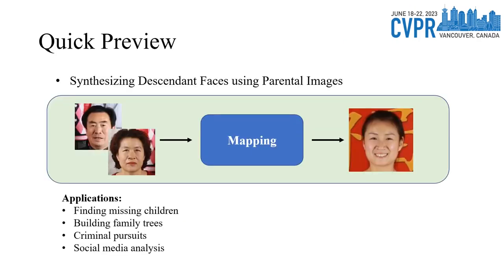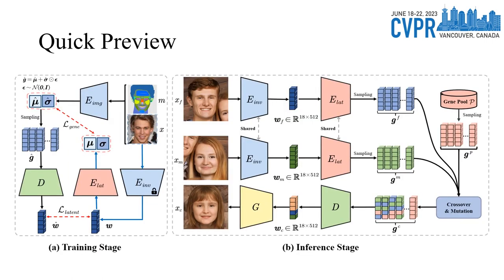Kinship Face Synthesis aims to synthesize descendants' faces based on the parent's appearance. This technology has many potential applications, such as kinship verification, finding long-lost children, and multimedia social applications. In this paper, we introduce StyleGene, a new framework for kinship face synthesis. StyleGene allows us to generate a variety of realistic descendant faces by leveraging the visual traits inherited from their parents. One notable advantage is that StyleGene's training process doesn't depend on kinship annotation.